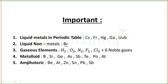Metalloids are B, Si, Ge, As, Sb, Te, Po, and At. Amphoteric elements are Be, Al, Zn, Sn, Pb, and Sb.